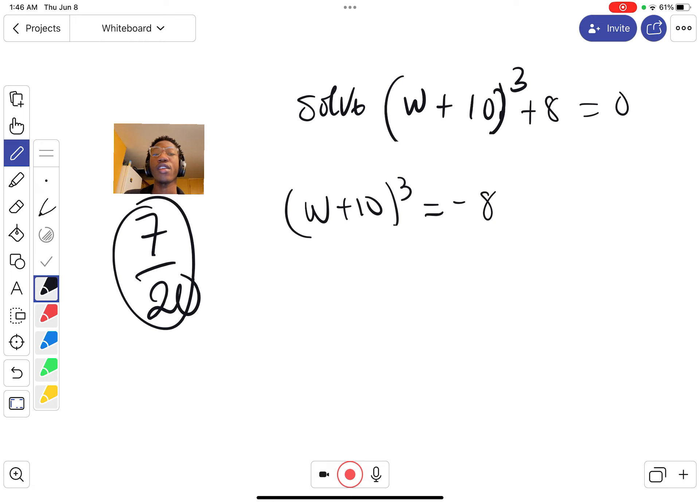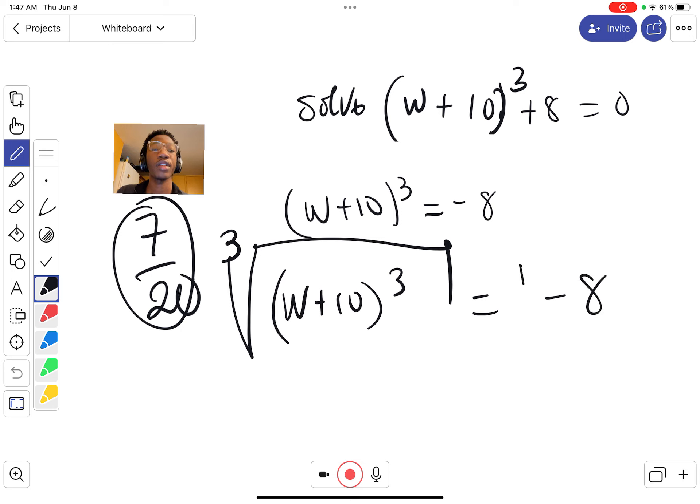Now we're gonna use the cube root on both sides. So it's gonna be the cube root of (w + 10)³ equals the cube root of -8.